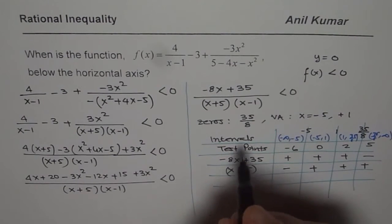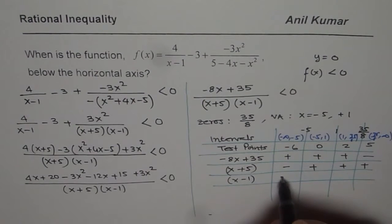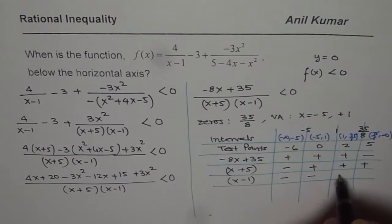For the factor, which is x minus 1, minus 6 gives me negative. 0 gives me negative. 2 gives me positive. And 5 gives me positive.